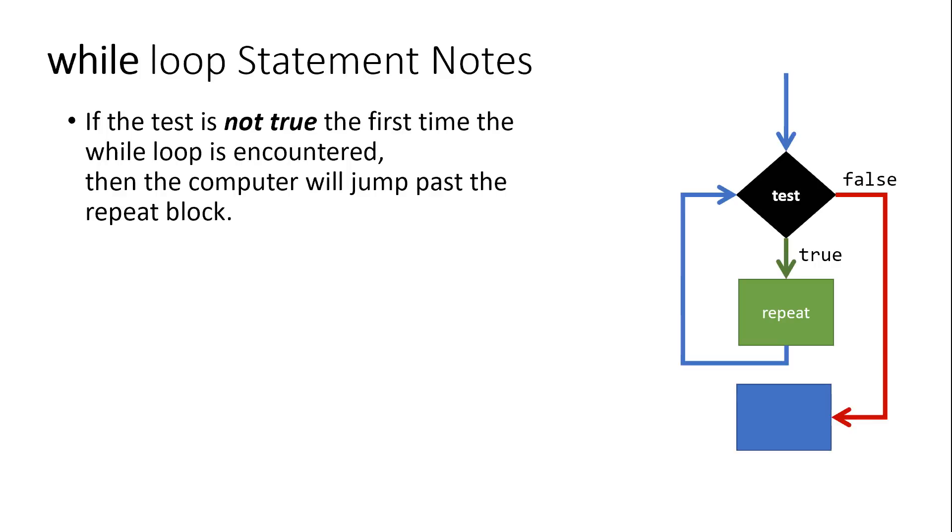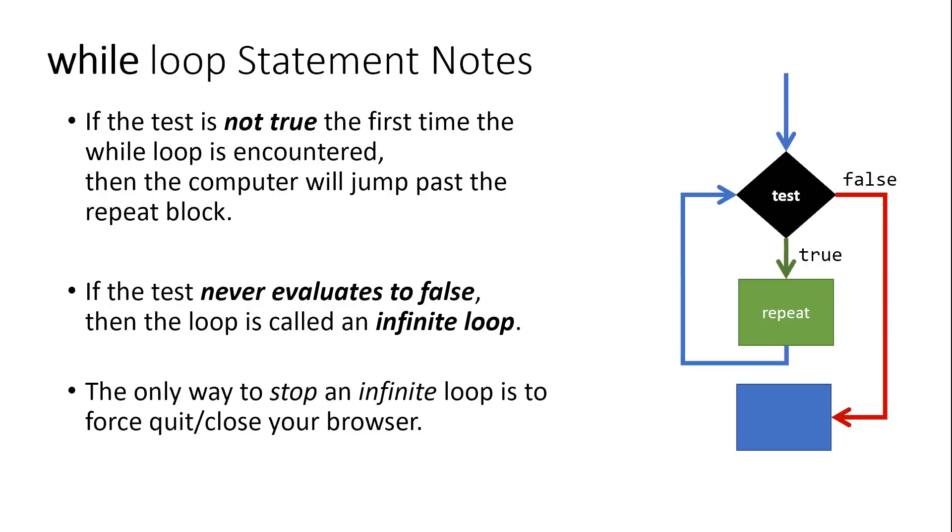There are a few things worth noting when thinking about a while statement. First, when the test is encountered, if it's initially false, there's no guarantee that you're going to enter the repeat block. So your while loop may not run at all. Second, if the test never evaluates to false, so if that test always evaluates to true, then the loop is called an infinite loop because you keep repeating and repeating and you never make progress beyond the repeat block. And when you run into this condition, you're going to see that one of the only ways to stop an infinite loop when we're writing code that runs in a web browser is to quit your web browser and restart it.